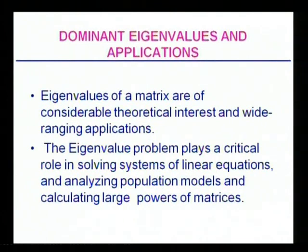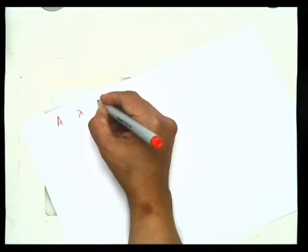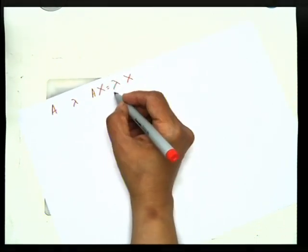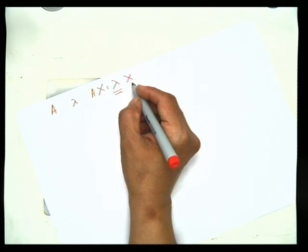What are eigenvalues? Eigenvalues of a matrix are of considerable theoretical interest and wide-ranging applications. If you have an n×n matrix A, lambda is said to be an eigenvalue if there exists a non-zero vector x such that Ax = lambda·x. Then we say that lambda is an eigenvalue and x is the corresponding eigenvector.